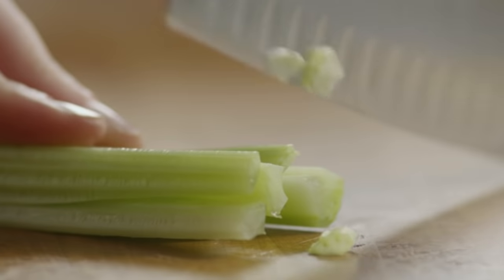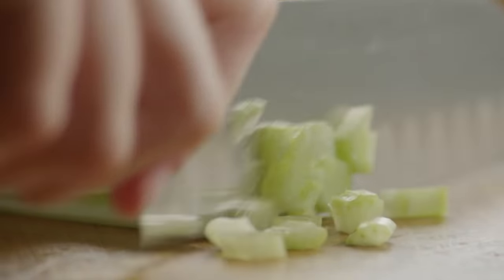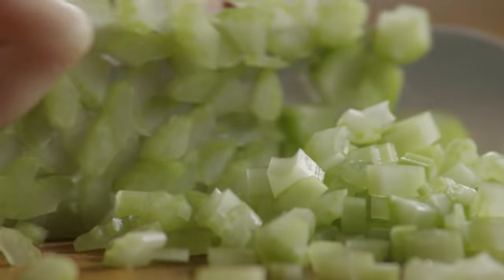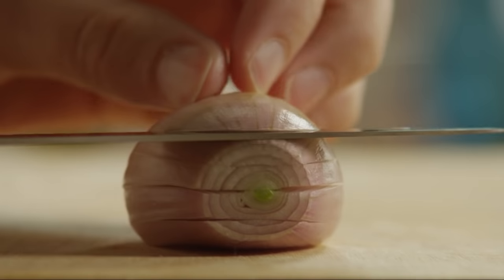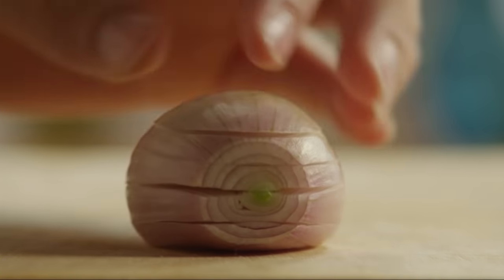Let's begin by mincing enough celery to make one cup. Then, mince enough shallots to make three tablespoons.